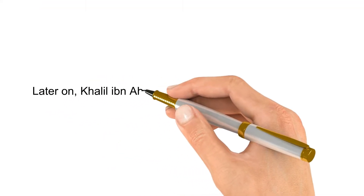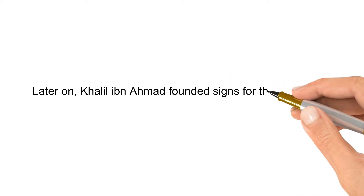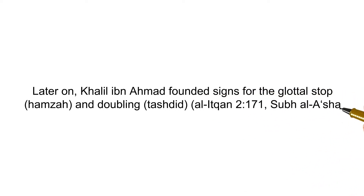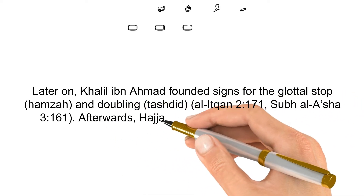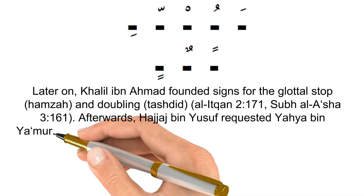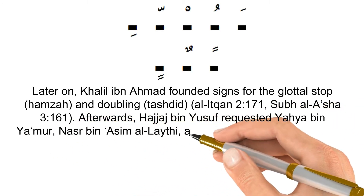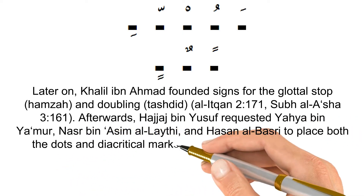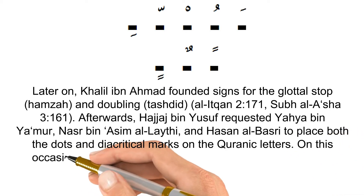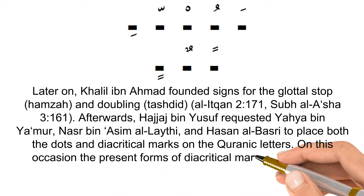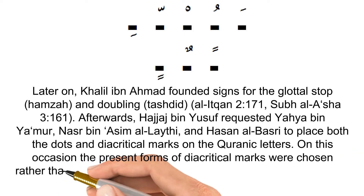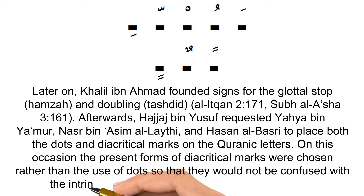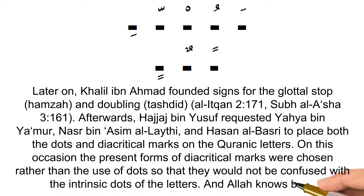Later on, Khalil ibn al-Ahmad founded signs for the glottal stop Hamza and the doubling sign Shaddah. Afterwards, Hajjaj ibn Yusuf requested Yahya ibn Ya'mur, Nasr ibn al-Asim al-Laythi and Hasan al-Basri to place both the dots and diacritical marks on the Quranic letters. On this occasion, the present forms of diacritical marks were chosen rather than the use of dots, so that they would not be confused with the intrinsic dots of the letters. And Allah knows best.